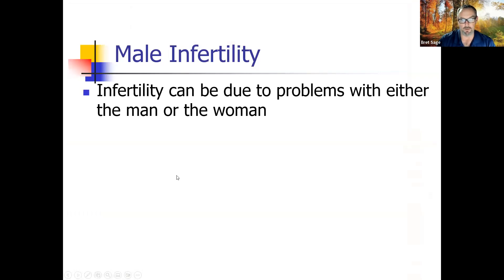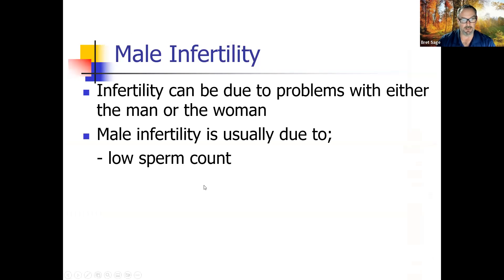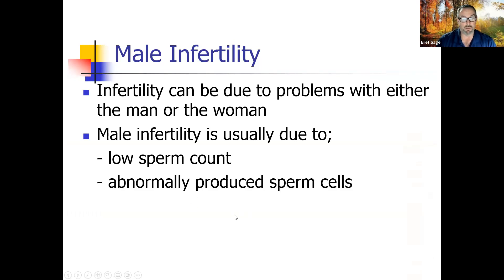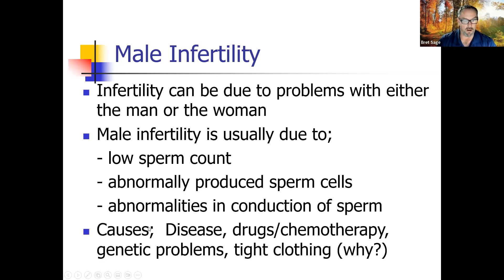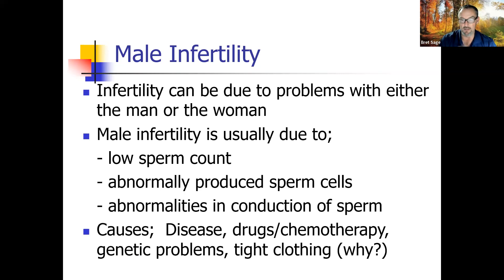Male infertility is usually due to low sperm count — fewer sperm means less chance of reaching the ovum — or abnormally produced sperm cells. It can also be due to blockage in the conduction tubes due to disease, physical damage, or injury. Drugs or chemotherapy kill rapidly dividing cells, including spermatogonia. Genetic problems and tight clothing can also cause issues — pressing the testicles against the body raises temperature above 98 degrees and reduces sperm numbers.